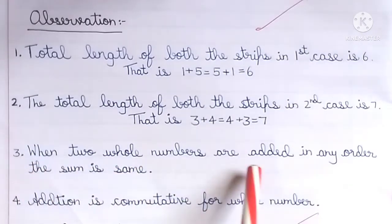When two whole numbers are added in any order, the sum is same. Addition is commutative for whole numbers.